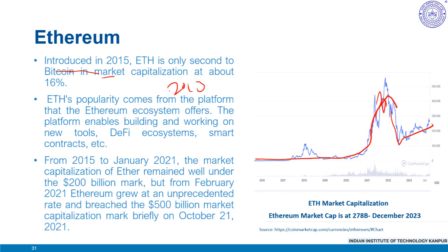Taking Ethereum's price now, this puts the return on investment at an annualized rate of around 270% — essentially almost quadrupling your investment every year since summer 2014. Ethereum's popularity comes from the platform the Ethereum ecosystem offers, enabling building and working on new tools, developer ecosystems, and smart contracts. The Ethereum Foundation officially launched the blockchain in July 2015 under the prototype name Frontier, with several network updates including Constantinople in February 2019, Istanbul in December 2019, Muir Glacier in January 2020, Berlin in April 2021, and most recently the London hard fork in August 2021.